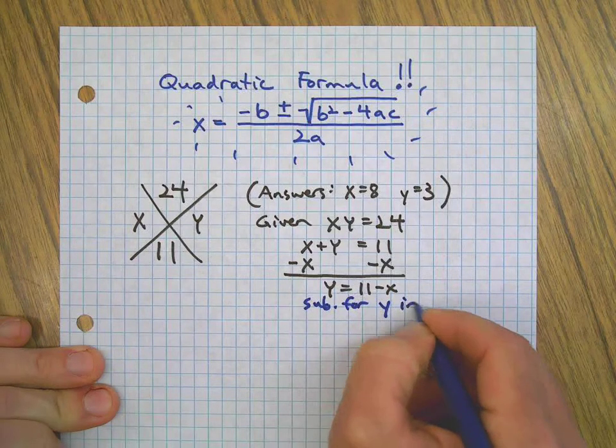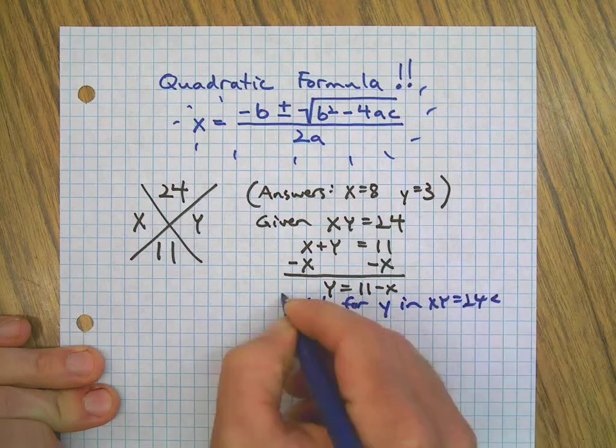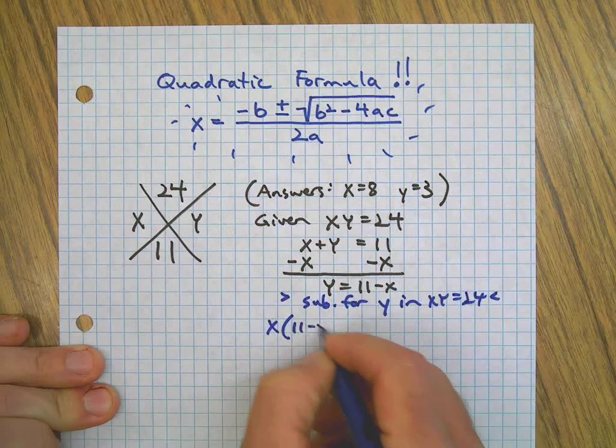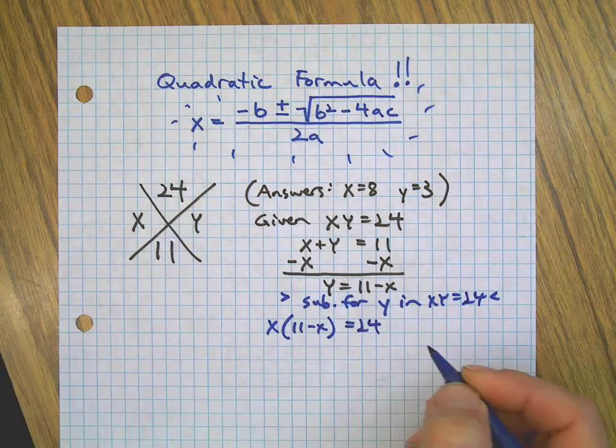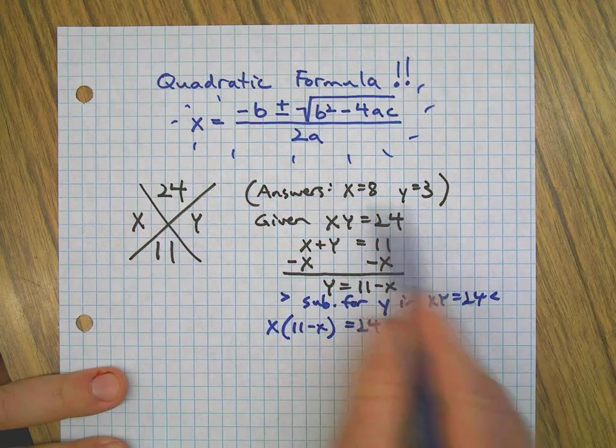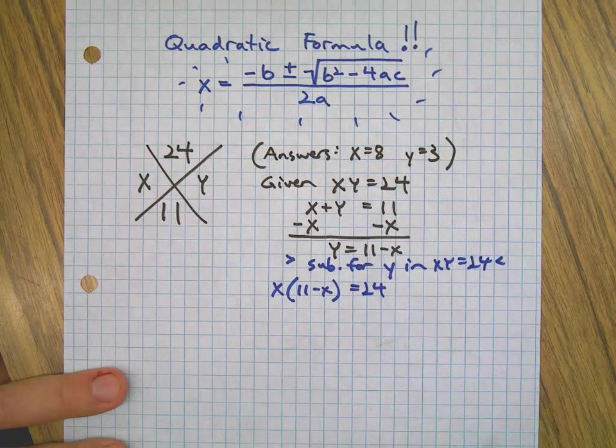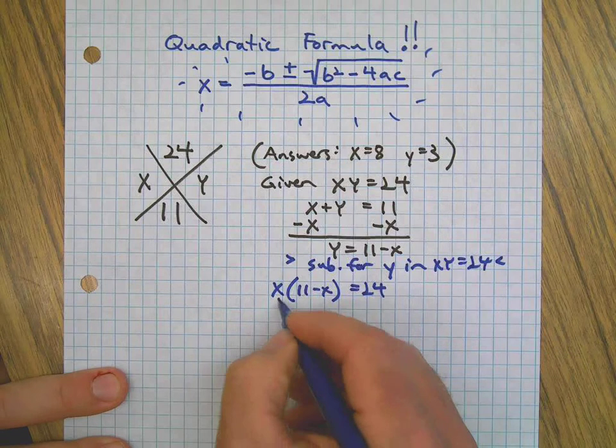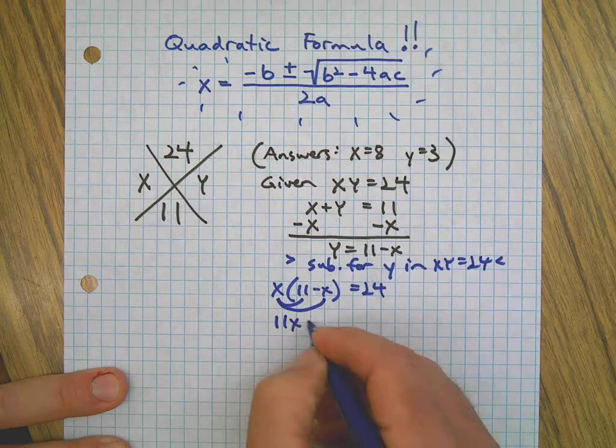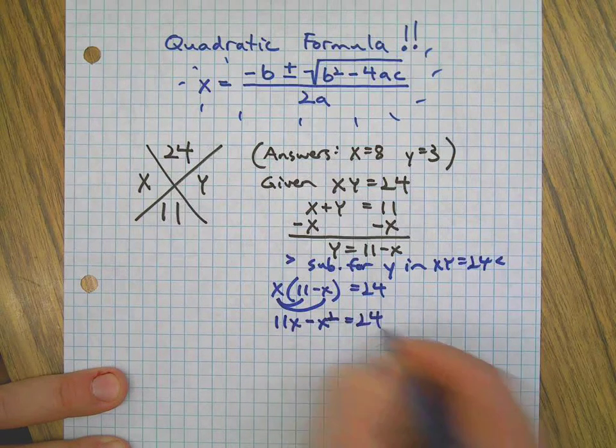Like this: x times y, which is 11 minus x, equals 24. So far so good, are you with me? We're just substituting and we already know the answers, but of course we're pretending that we don't so I can show you how the quadratic formula works. We multiply using the distributive property: 11 times x minus x squared equals 24.